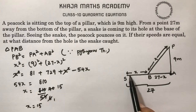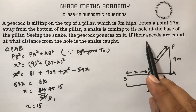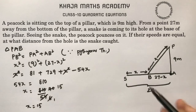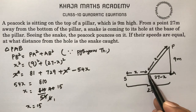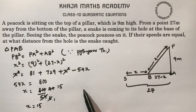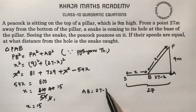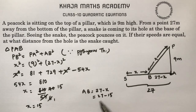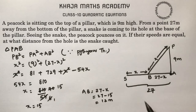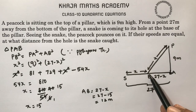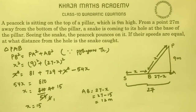The value of x is 15. But the question asks for the distance from the hole where the snake is caught. AB equals 27 minus x, so 27 minus 15 equals 12 meters. The peacock pounces on the snake at a distance of 12 meters from the hole.